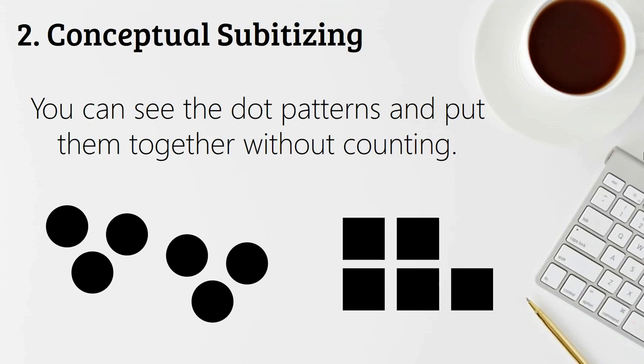So conceptual subitizing is different. It's where you see things clustered. So I might see that there's two drinks on the table and one iPad and one microphone. So I go two, one, one, and I know that that's four. So you might see two groups of three dots and just automatically know that that's six without having to count each of the individual dots.